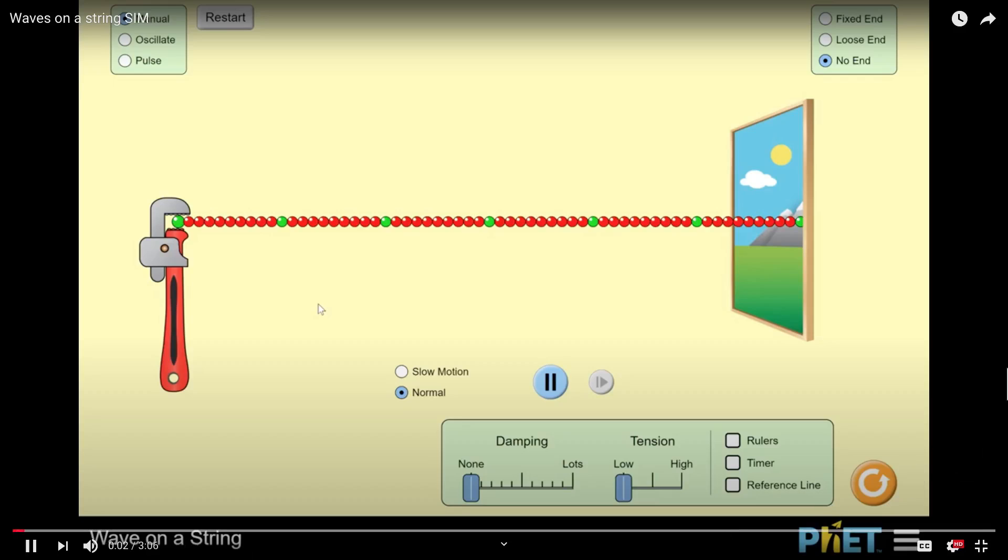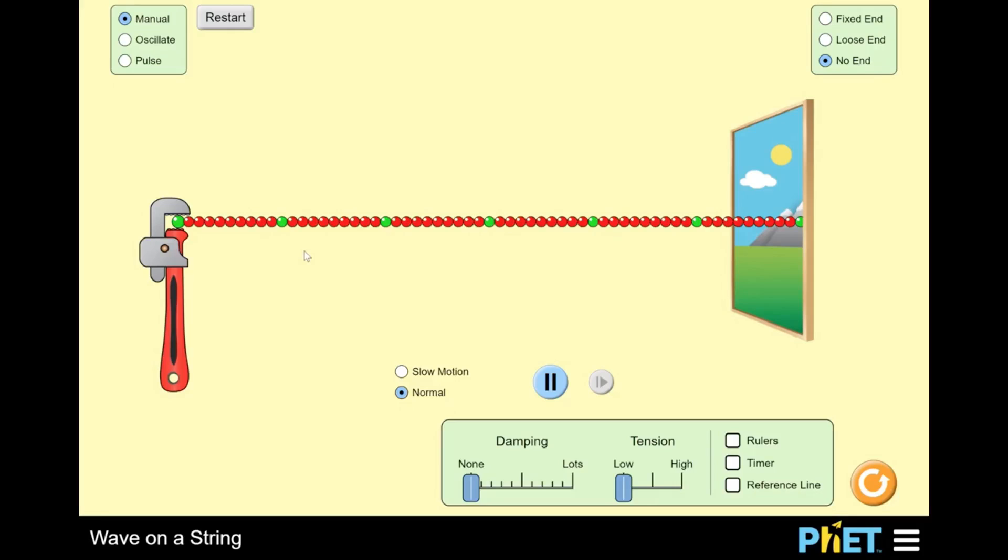It looks like the string is made up of little beads, and I think that's just to emphasize that the string has a lot of different parts to it, and these parts are coupled together. What I can do here is control the left side of the string with this wrench, so let's see what happens when I move the wrench up and down.